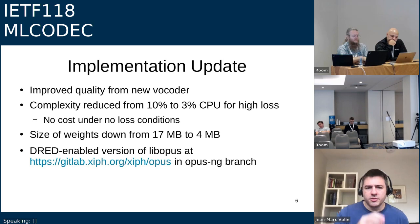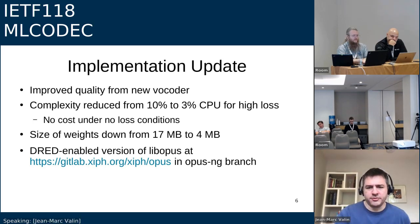Tim Terry asked: of the four megabytes, what fraction is the bits-to-features decoder? Of the four megabytes, the decoder that would need to be standardized is about one megabyte. Still trying to shrink that a bit, but that's better shape. The rest is mostly the vocoder and the encoder.